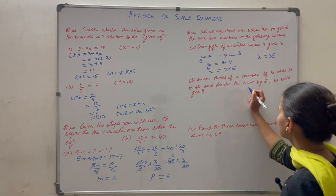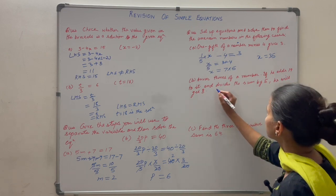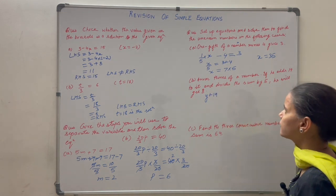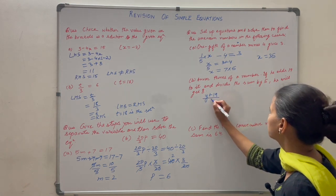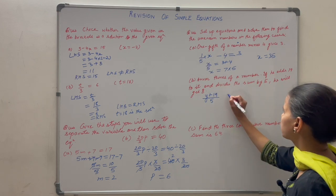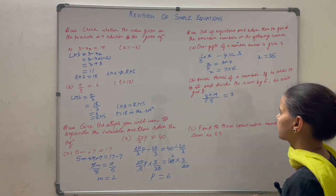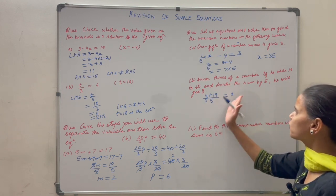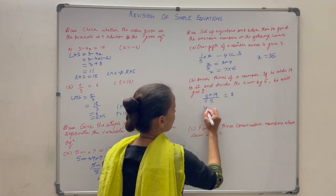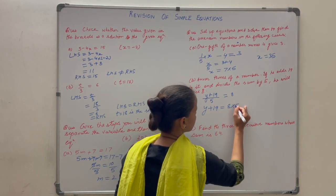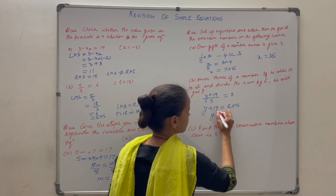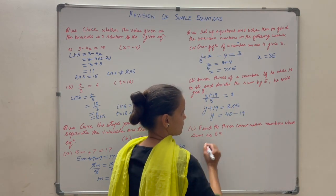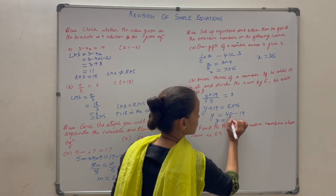Another problem: someone thinks of a number, let it be y. He adds 19 to it and divides the sum by 5, getting 8. So the equation is (y plus 19) divided by 5 equals 8. The 5 cross-multiplies: y plus 19 equals 8 into 5 equals 40. Then plus 19 goes to the other side as minus 19: y equals 40 minus 19 equals 21.